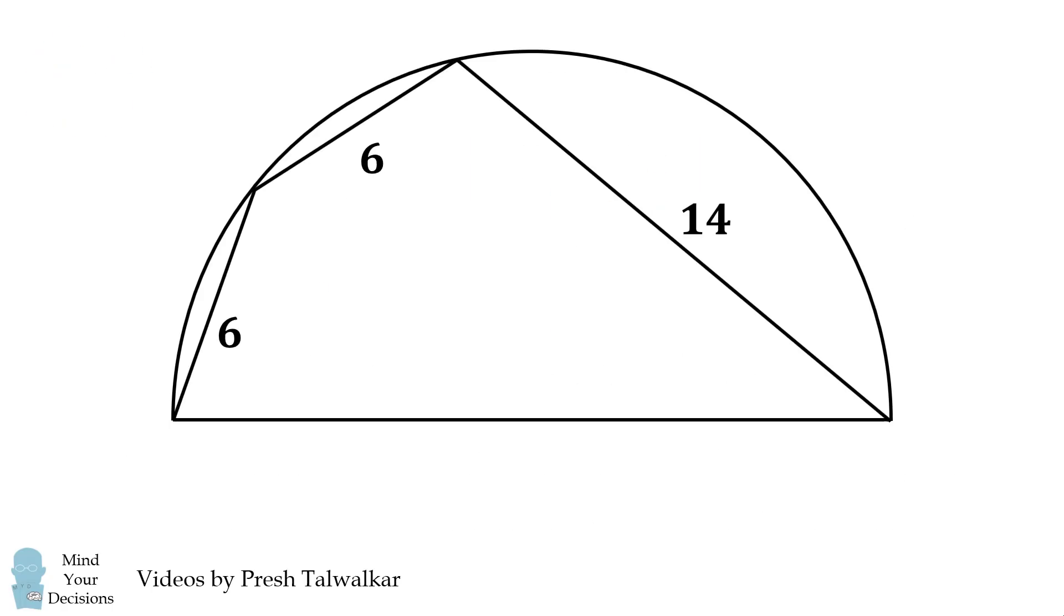We'll get started by drawing a chord to connect the two chords that have a length of 6. Because these two chords have equal length, the angles opposite them will have equal measure. Therefore, the arcs that correspond to these inscribed angles will also have the same measure.